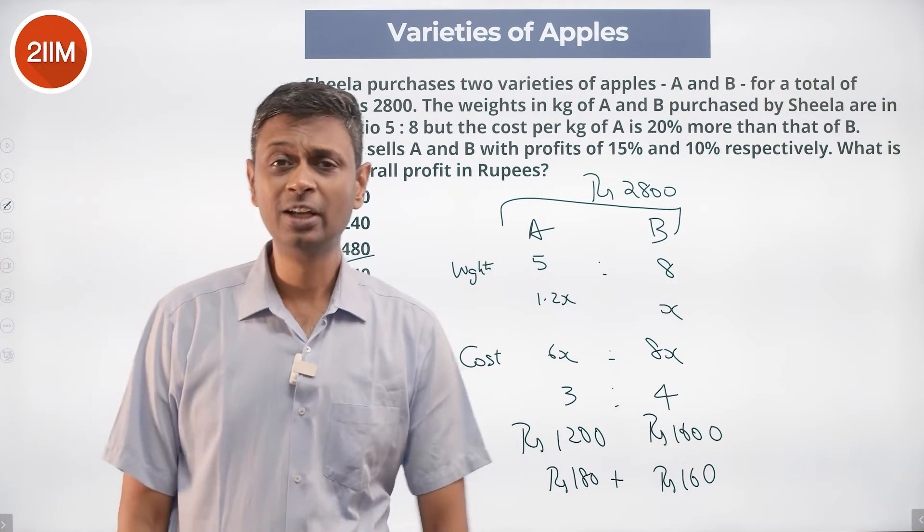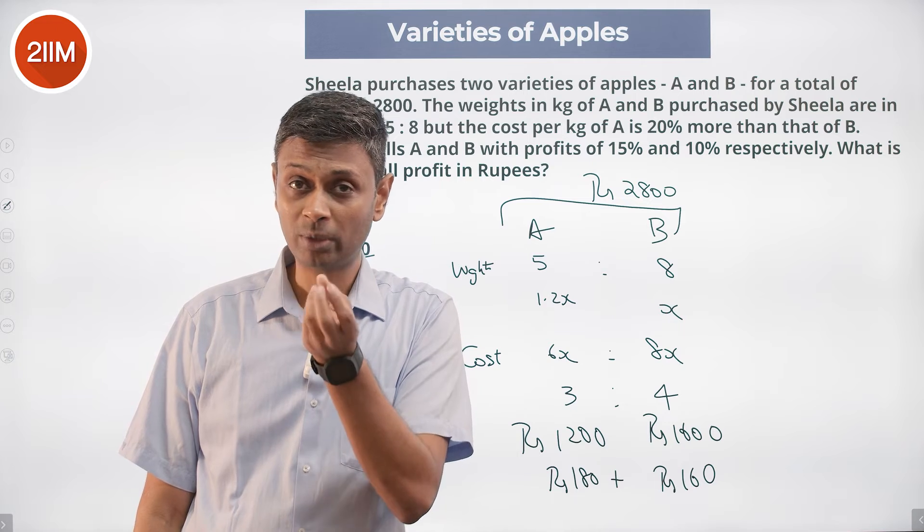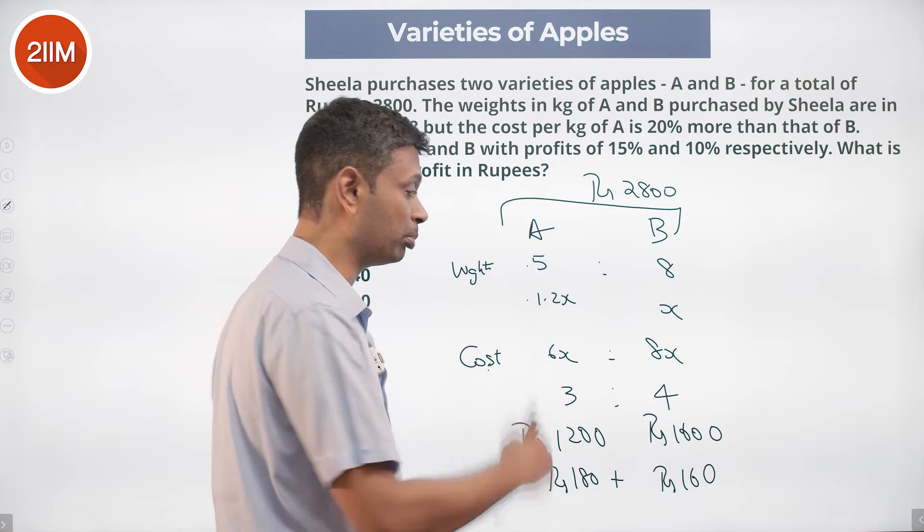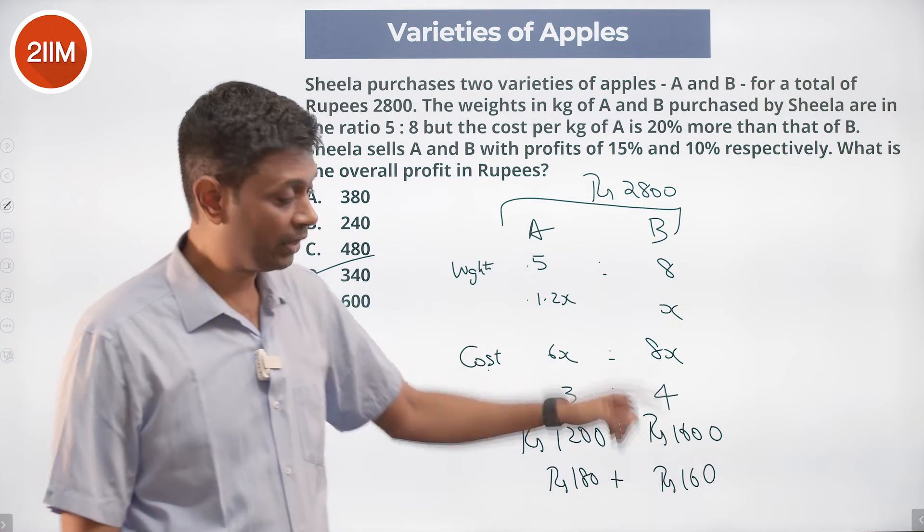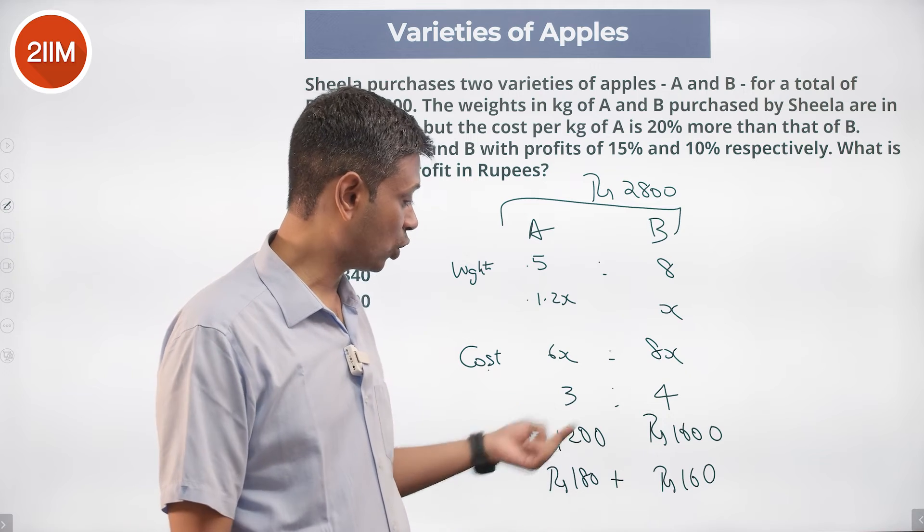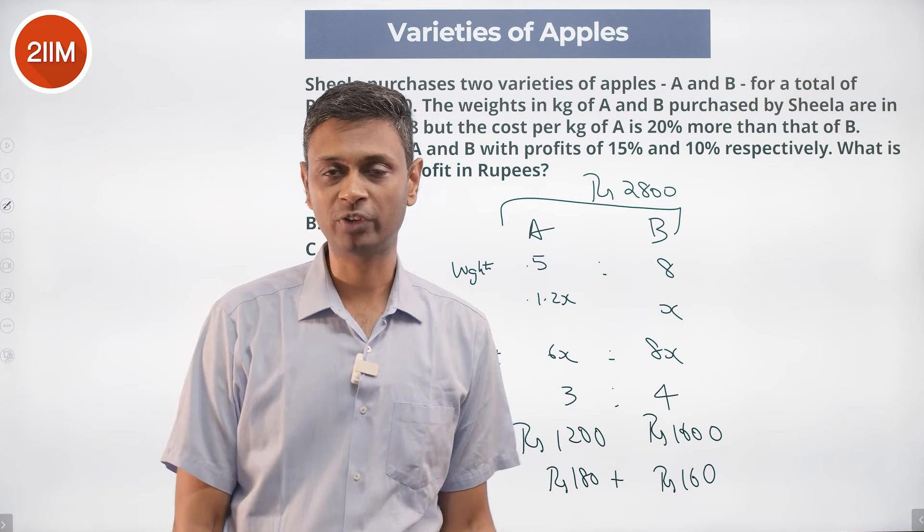Weight in the ratio 5:8, cost 20% more per kilogram, so weight times per kilogram cost gives us the ratio 6:8 or 3:4 for total cost. Cost price of A, cost price of B, then find profit of A, profit of B, and add it up.